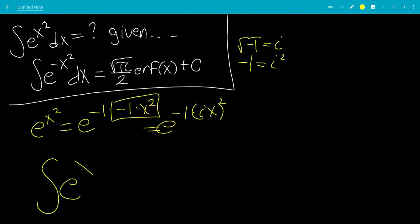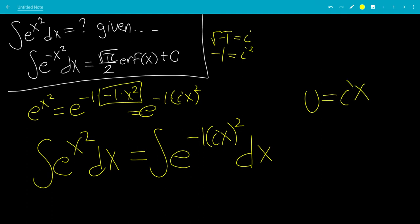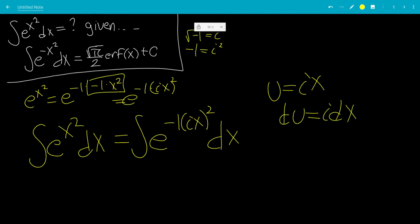So we have the integral of e to the x squared equals the integral of e to the minus 1 times ix quantity squared. So we can do a simple u substitution, u equals ix, du equals idx. We're going to multiply by i, and then we're going to divide by i.